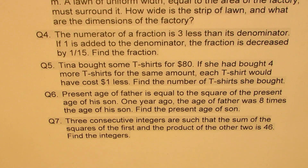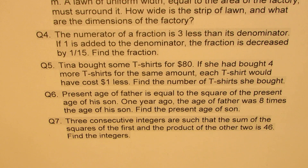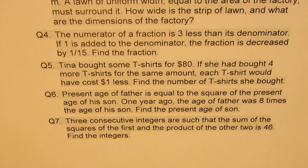Tina bought some t-shirts for $80. If she had bought 4 more t-shirts for the same amount, each t-shirt would have cost $1 less. Find the number of t-shirts she bought. Question six: Present age of father is equal to the square of the present age of his son. One year ago, the age of father was 8 times the age of his son. Find the present age of father.